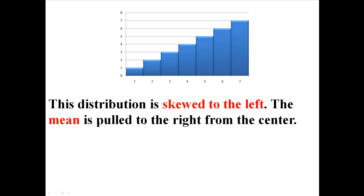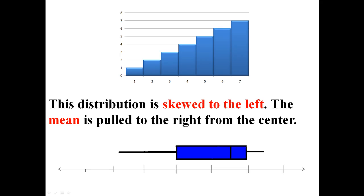This last distribution is skewed to the left, which means that the mean is going to be pulled to the right from the center. And this is what a box plot would look like for this kind of data.